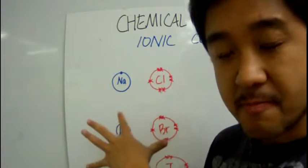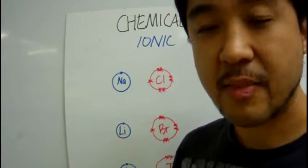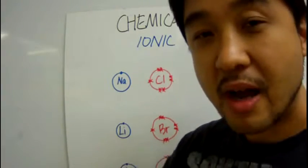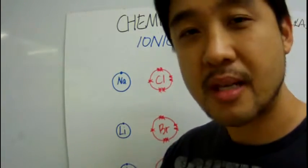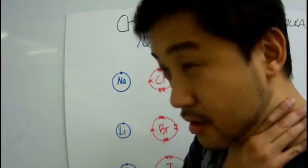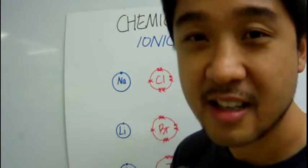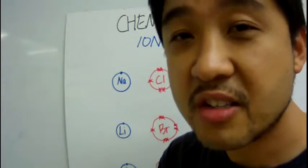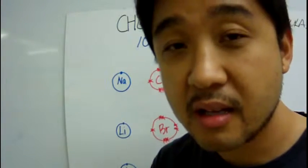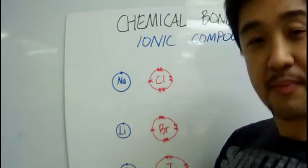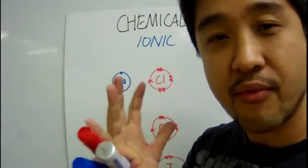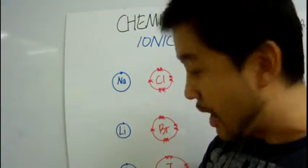Here we have sodium, which is a very reactive metal — put a little bit in water and you see it jumping around like a Mexican jumping bean. And chlorine, which is a very toxic gas. It's very toxic, and if you're exposed to too much of it, you can die.